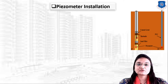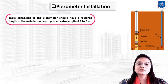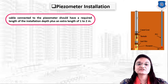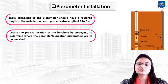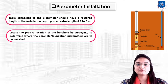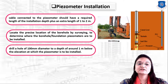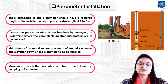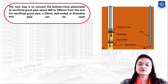Before and after installation, take the following precautions: the cable connected to the piezometer should have the required length of the instrument installation depth plus an extra one to two meters. Survey the precise location of the borehole before installation. Drill a hole of 100 mm diameter to a depth of around one meter below the elevation at which the piezometer is to be installed. Wash the borehole clean from top to bottom by pumping in fresh water.